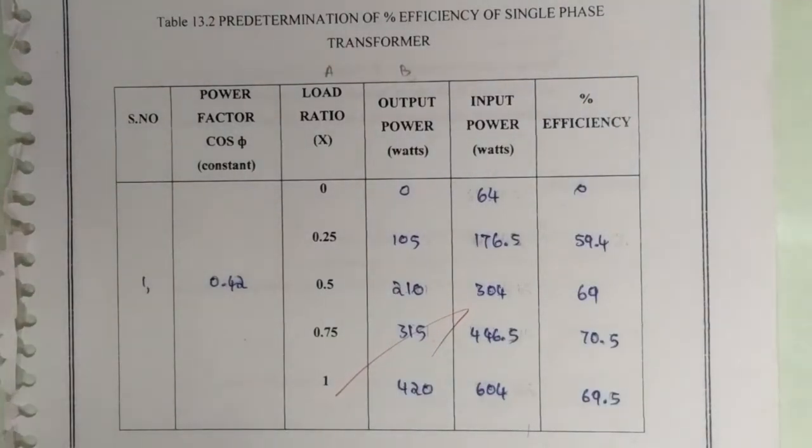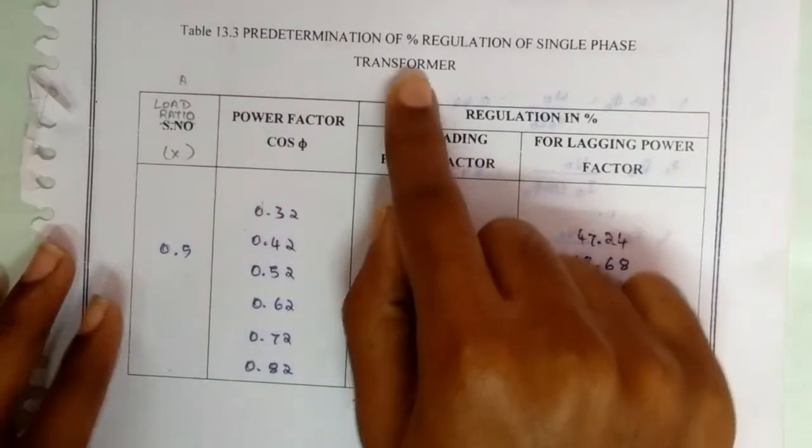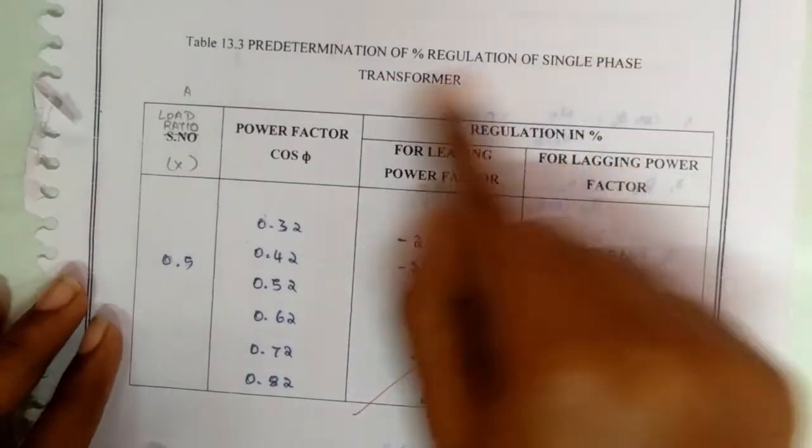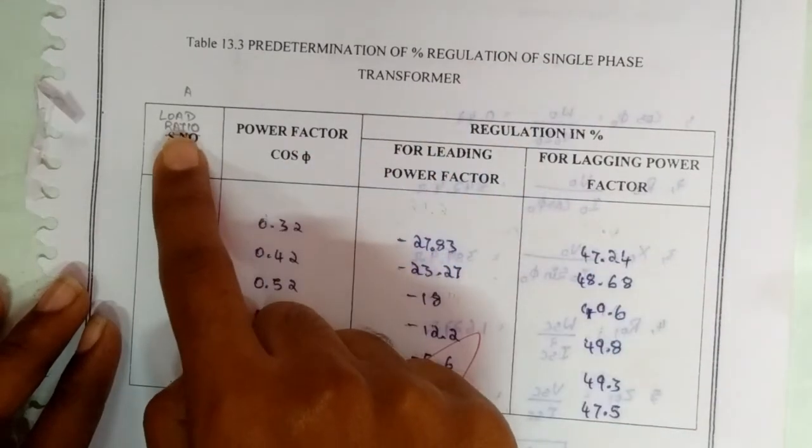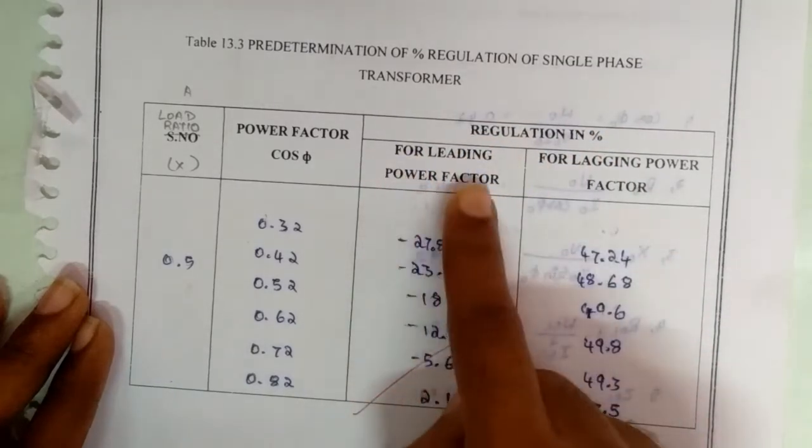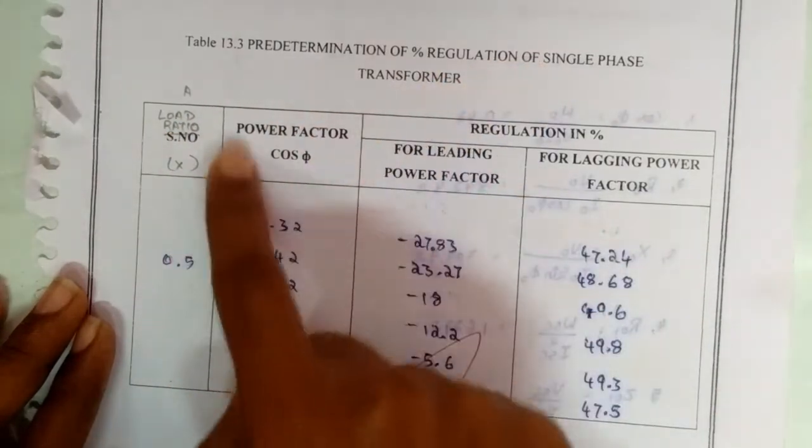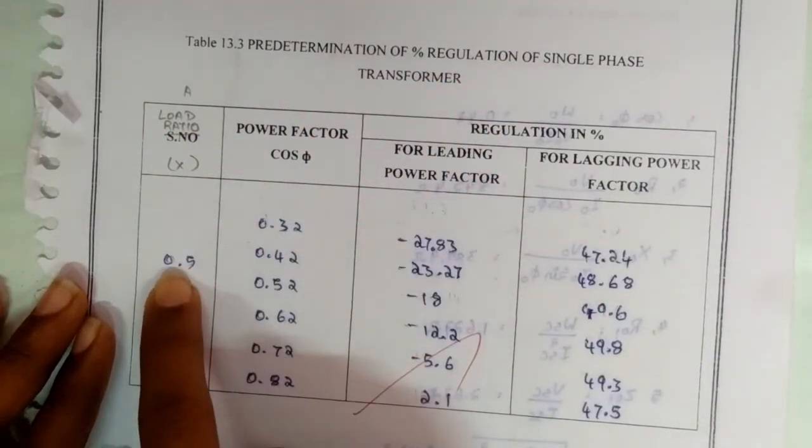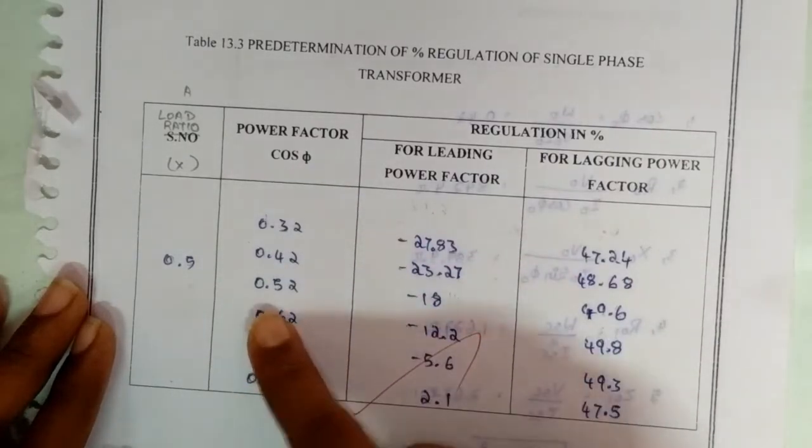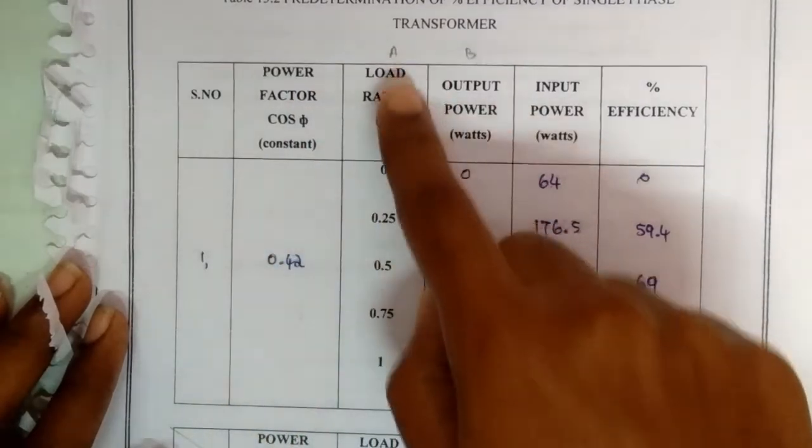And then another tableau column for regulation: predetermination of percentage regulation of single phase transformer. Here, load ratio, power factor, regulation in percentage for leading power factor and for lagging power factor. For regulation, the load ratio will be a constant one and power factor will be variable values. But for efficiency, the power factor cos φ₀ is constant and load ratio will be a variable value.